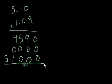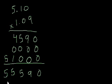And now we add it all. We get 0, 9, 5, 5, 5. And like we did before, we just count the decimals. 1, 2, 3, 4. So 1, 2, 3, 4. So the decimal will go here. So we got 5.5590 as the answer.